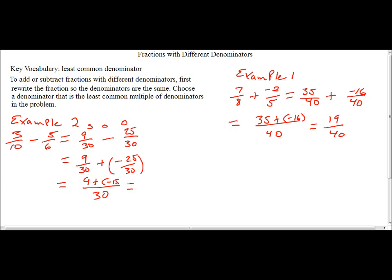Since their signs are different, we can take the smallest absolute value, which is 9, and subtract it from the largest absolute value, which is 15. 9 from 15 will give me... Oh, that's what I'm doing wrong. That's 25. And so now that's going to give me 16 over 30.